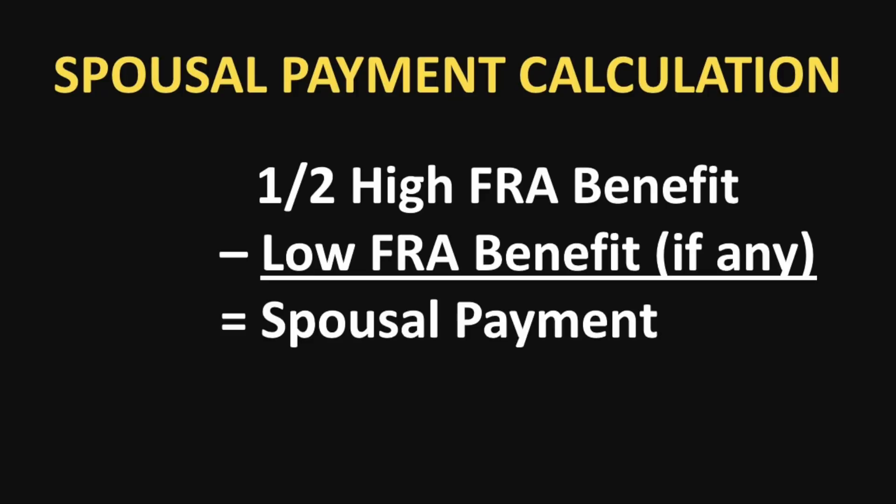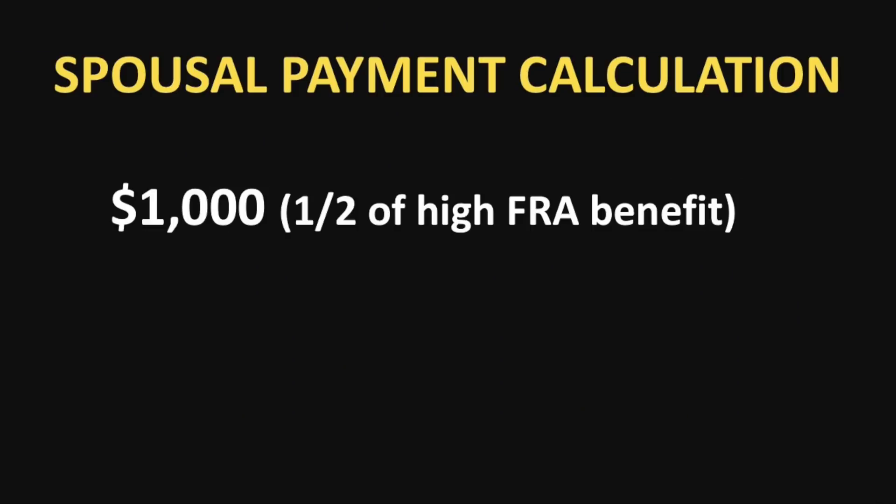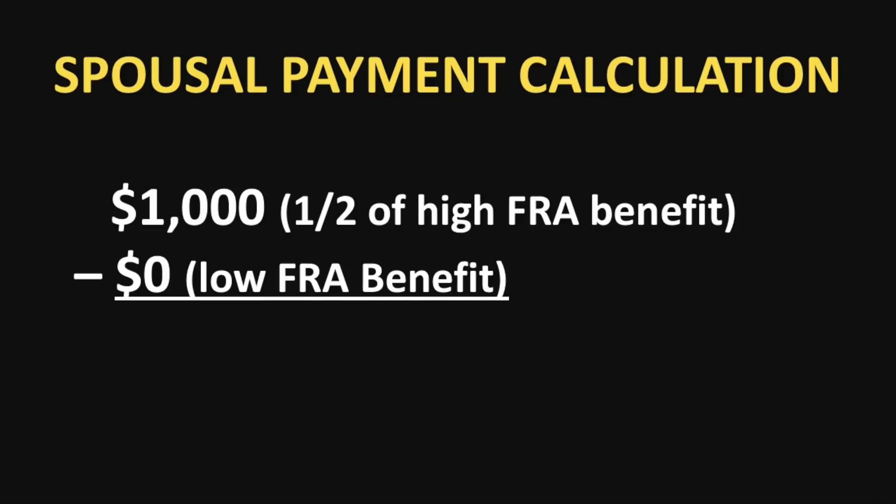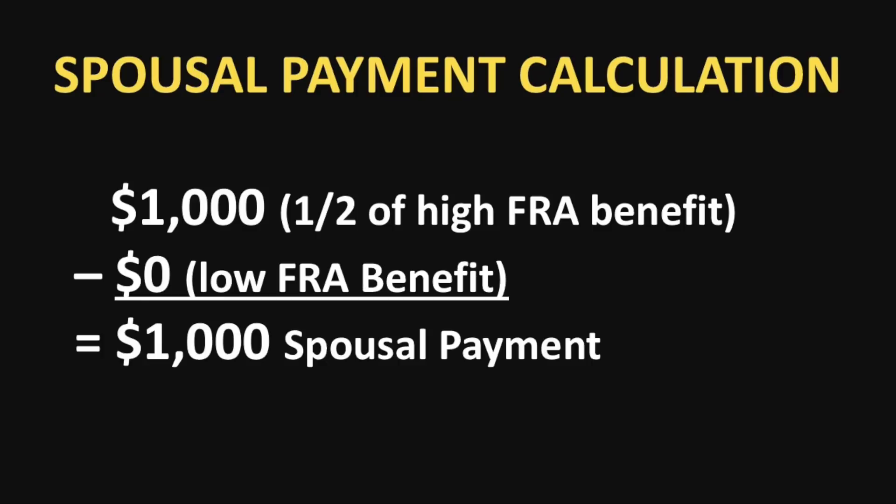Let's walk through an example. Let's assume that the higher earning spouse has a primary insurance amount of $2,000. Half of that is $1,000. Then let's assume that the other spouse did not have a benefit of their own. This means that the spousal payment is $1,000.